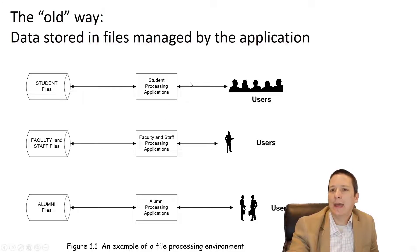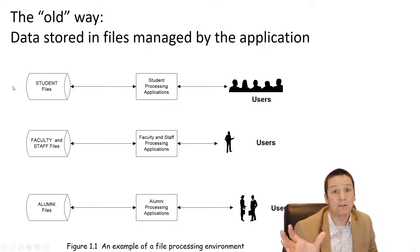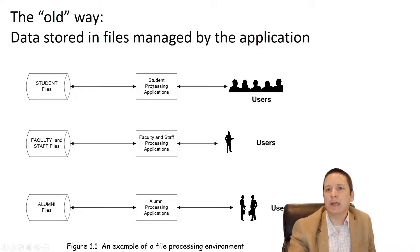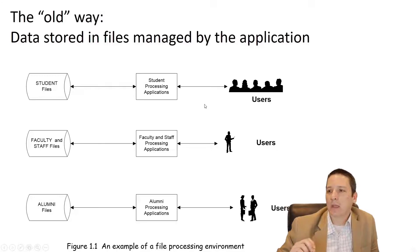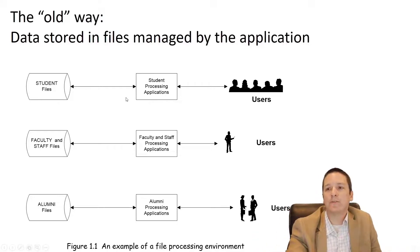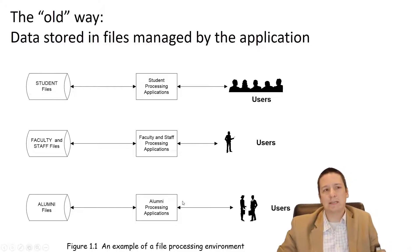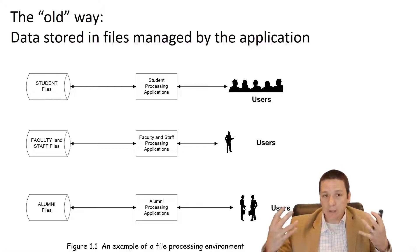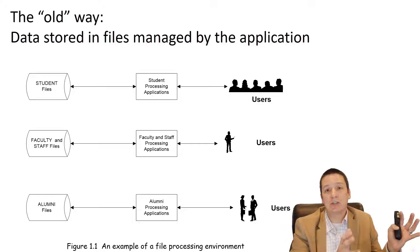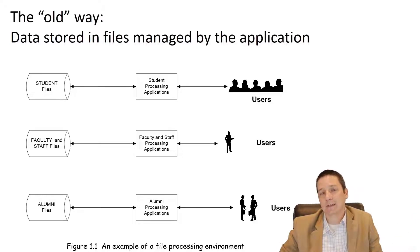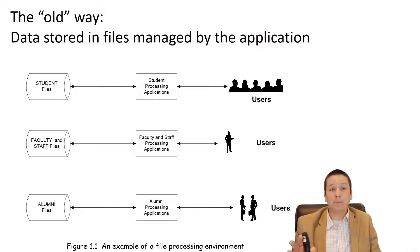For each application, it would maintain its own data file, and inside the application it would specify what that data file is supposed to look like. So if we had three different applications within a university — one for processing student data, one for processing employee data (faculty and staff), and a third for alumni relations — you would have three different applications each individually managing their own data. We can get by like this, but there are going to be some problems.